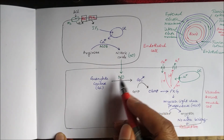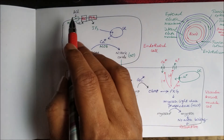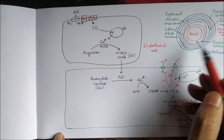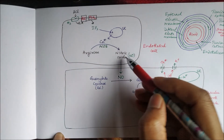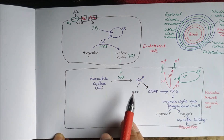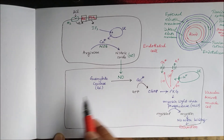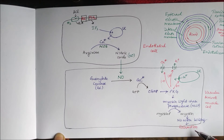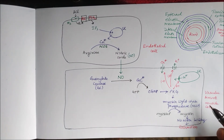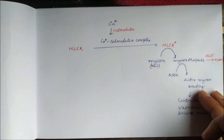In this way, nitric oxide acts as the second messenger in the smooth muscle cell. Acetylcholine acts on the M3 receptor in the endothelial cell, where the second messenger is IP3. Nitric oxide is then transported to the vascular smooth muscle cell, where through cyclic GMP and protein kinase G it causes relaxation. This is the complete mechanism of the vasodilatory action of acetylcholine. Thank you.